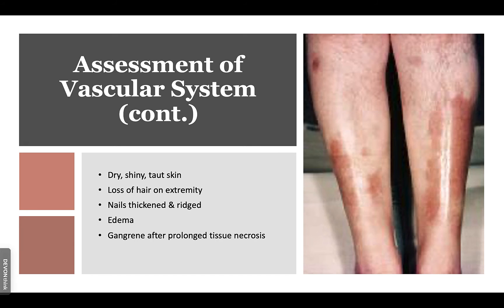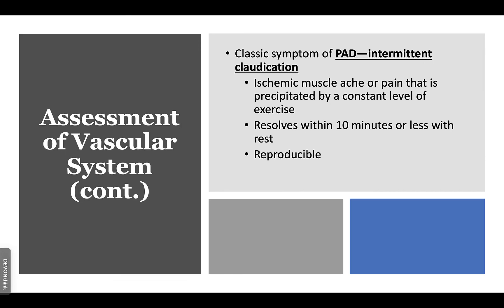Intermittent claudication describes ischemic muscle and is a sign of peripheral arterial disease. It should resolve within 10 minutes or less and is reproducible — meaning if you walk the same exact distance, you should be able to produce the same symptoms time and time again.